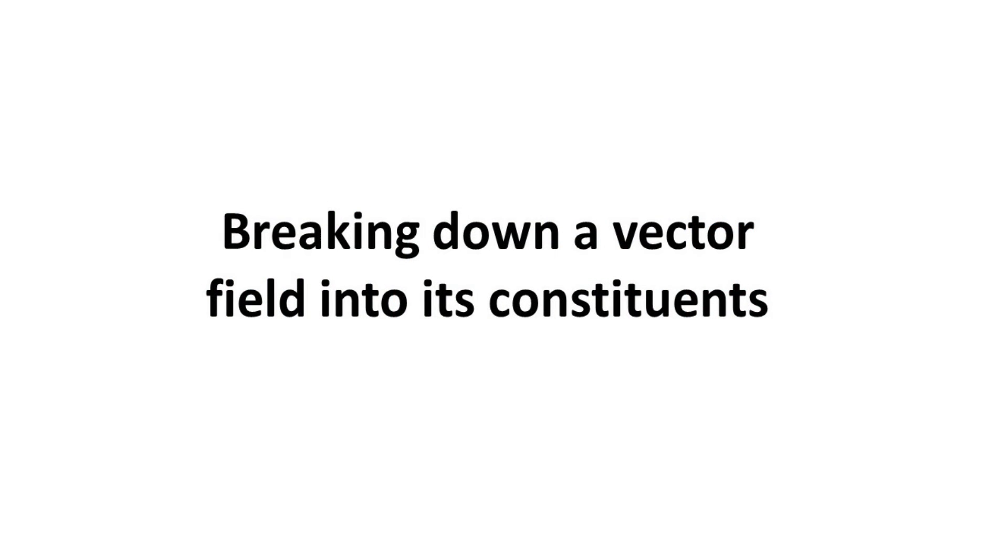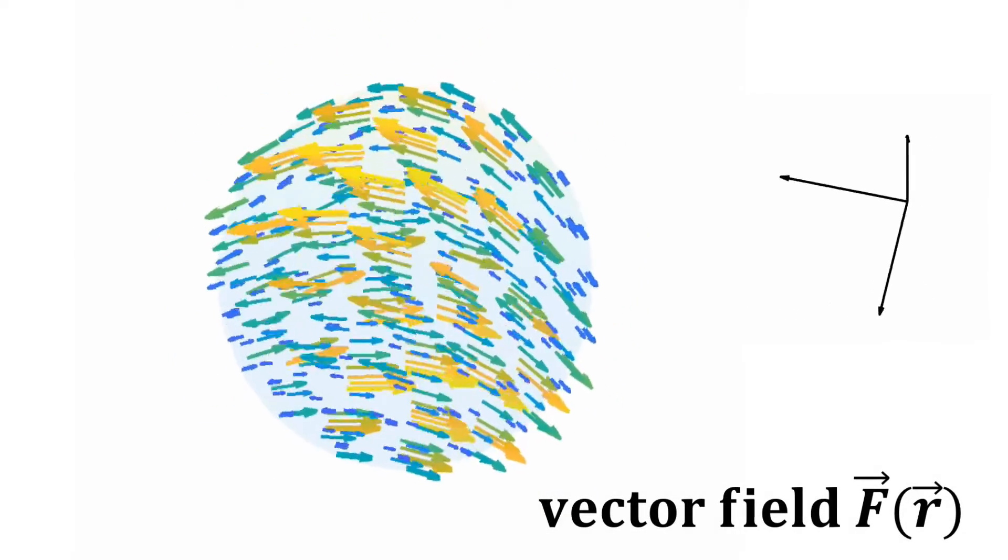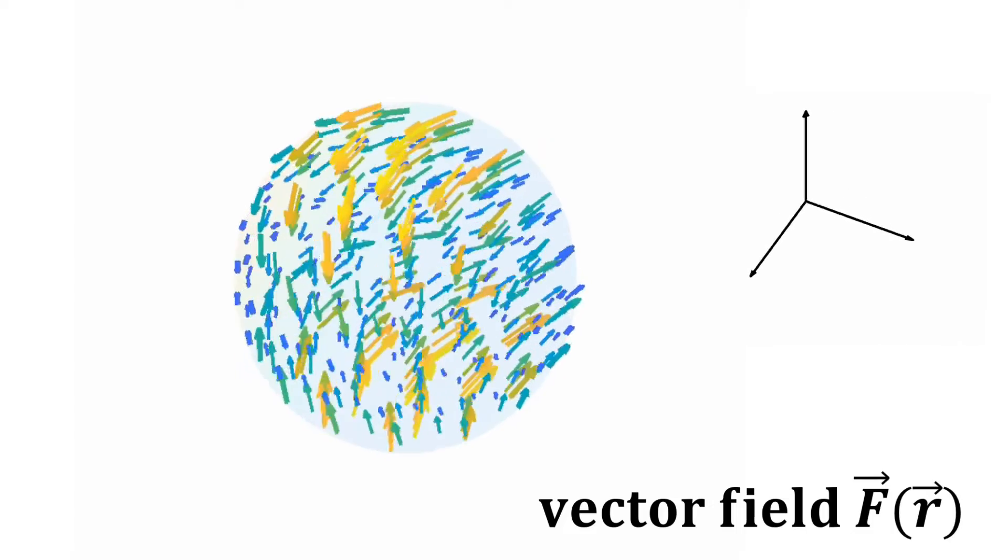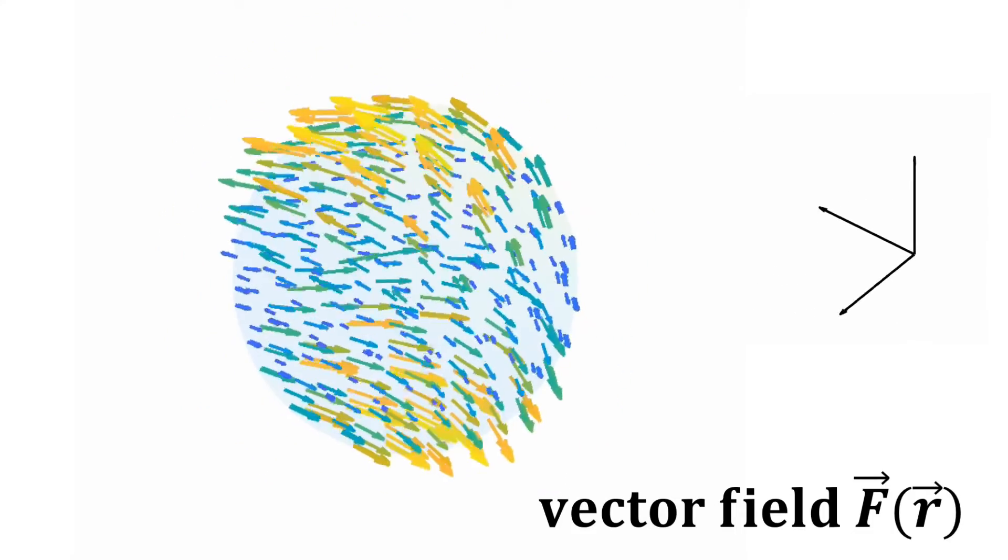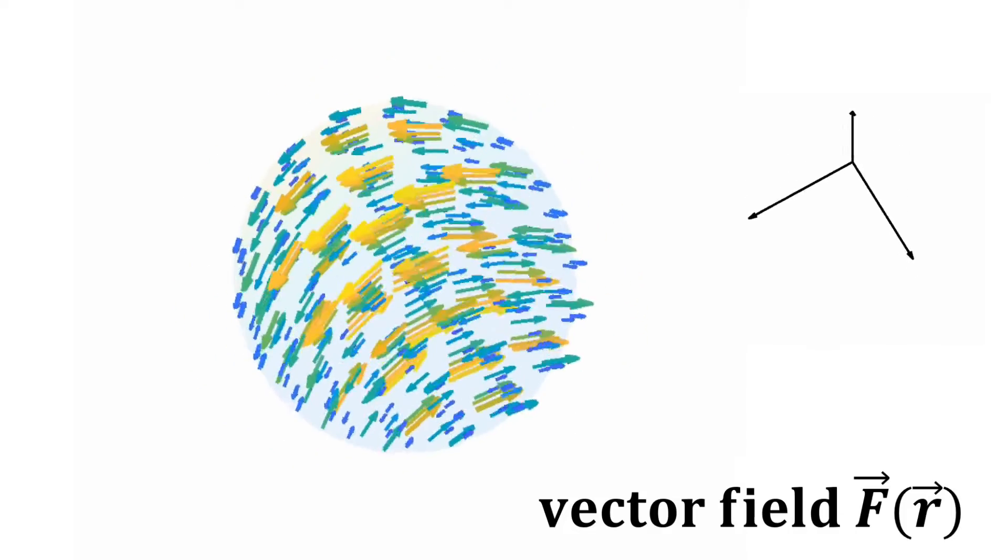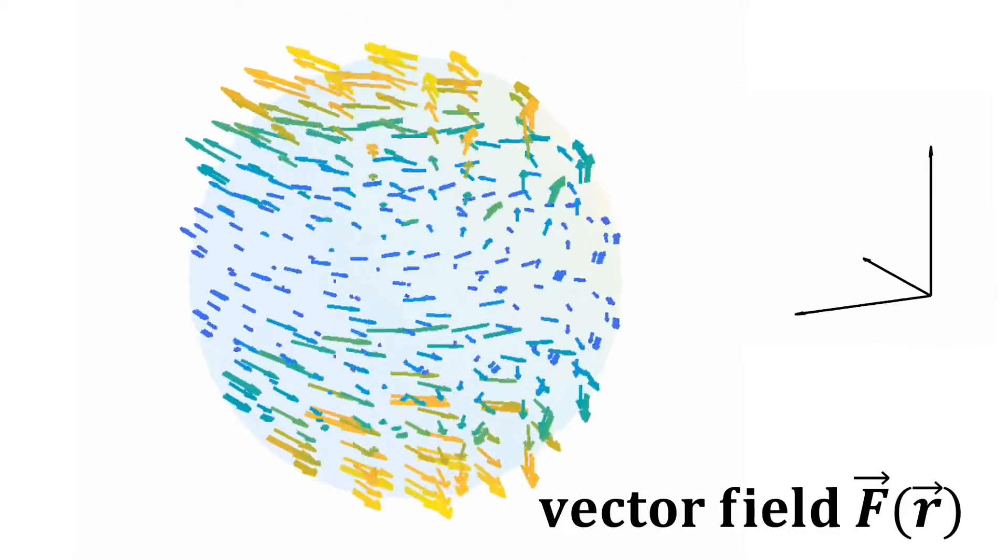Part 3. Breaking down a vector field into its constituents. Now consider a well-behaved vector field F. Our task in this last chapter is to explain how one goes about deconstructing the vector field into its three constituent components.